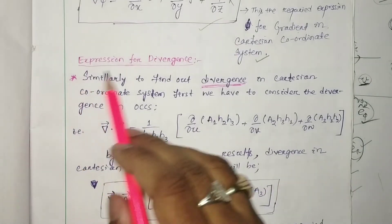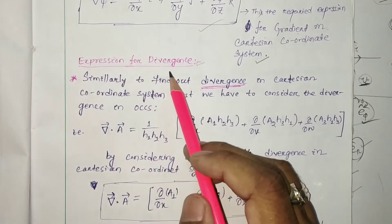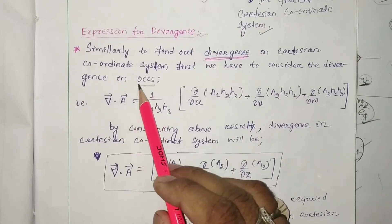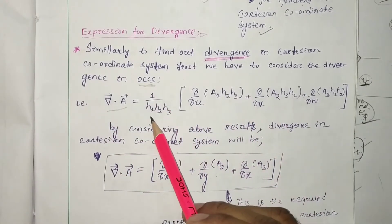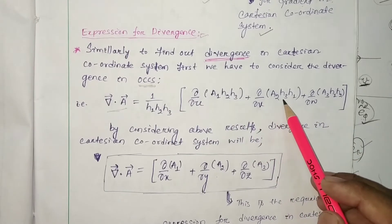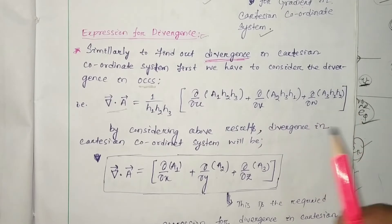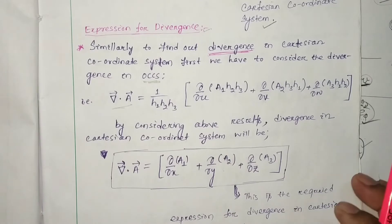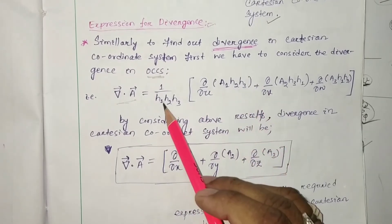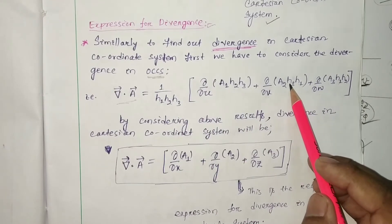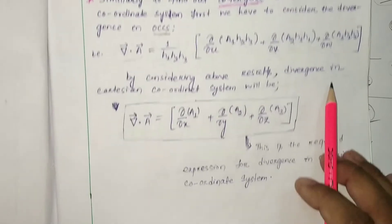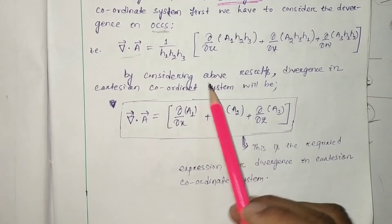Now we go for the expression for divergence. To find divergence in the Cartesian coordinate system, we consider divergence in OCCS: div A equals (1/h1 h2 h3)[del/del u (a1 h2 h3) + del/del v (a2 h3 h1) + del/del w (a3 h1 h2)]. Substituting h1 = h2 = h3 = 1 and u = x, v = y, w = z, we obtain the divergence of the vector field in the Cartesian coordinate system.